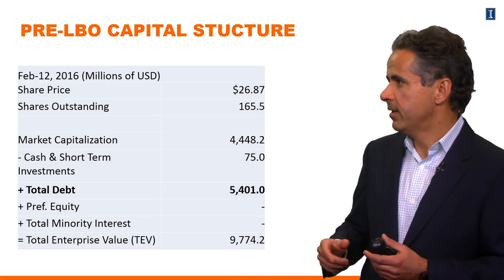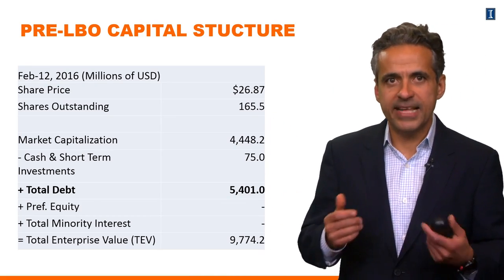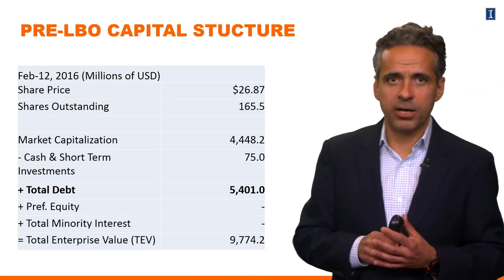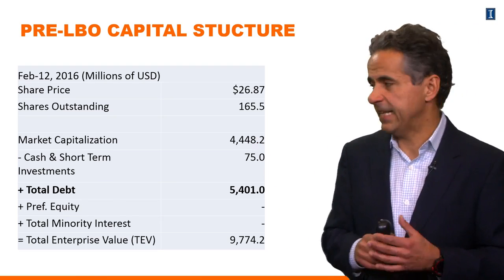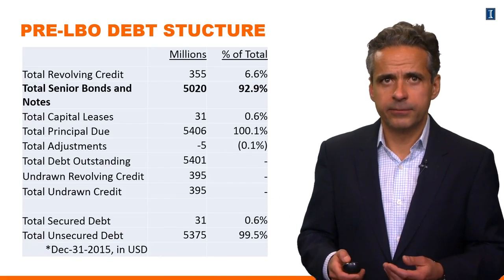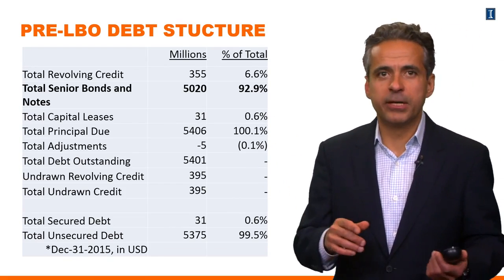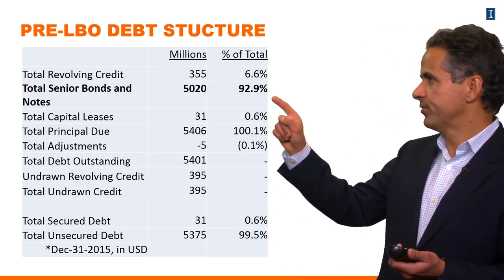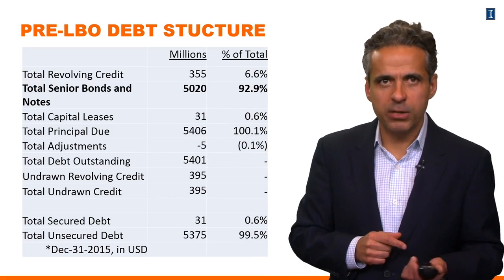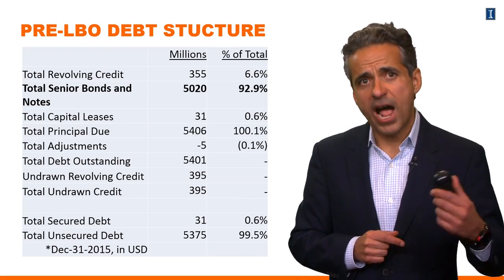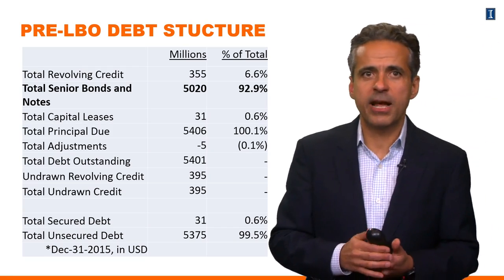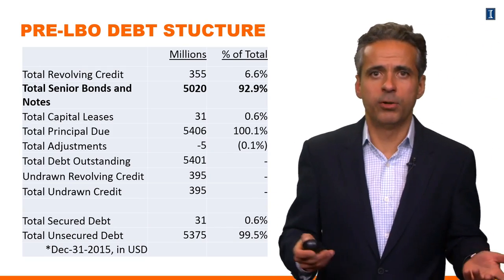Let's look at the data for ADT. This is a snapshot from ADT's capital structure prior to the deal announcement. It had $5.4 billion in outstanding debt already, and the equity was worth about $4.5 billion at that time. Typical of a large public company like ADT, most of the debt was coming from bonds — about $5 billion in outstanding bonds prior to the leveraged buyout. It didn't really have much in terms of term loans; it had drawn down on the credit line but had no term loans at that point.